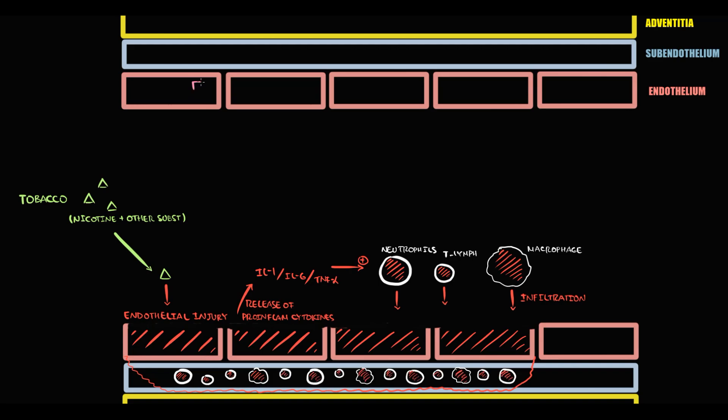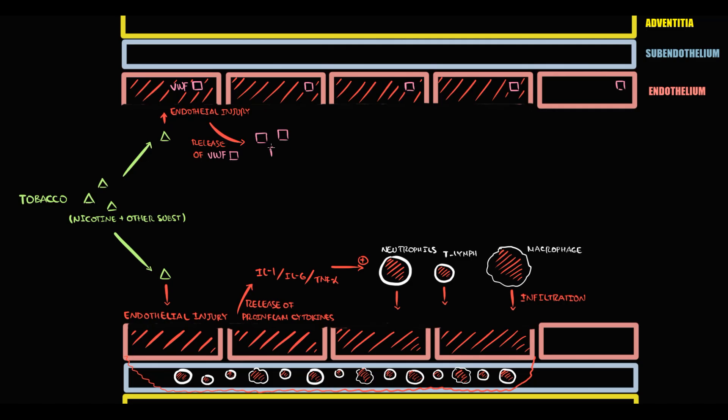But there is a second problem. Recall that endothelial cells contain von Willebrand factor, and the function of von Willebrand factor is to provide aggregation of platelets. When nicotine and other chemicals cause injury to endothelial cells, with damage, endothelial cells release von Willebrand factor into the circulation. This massive release of von Willebrand factor creates a prothrombotic state.